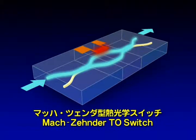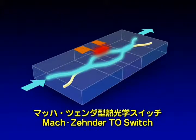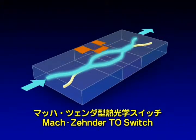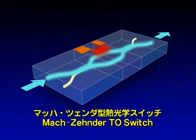When the thin film heater is turned on, the refractive index of the arm under the heater changes due to thermo-optic effects. This generates a phase difference between the optical signals in the two arms, and the signals are output to the other port. The Mach-Zender TO switch controls the route of the optical signals in this way.